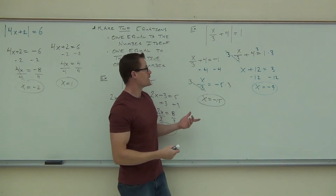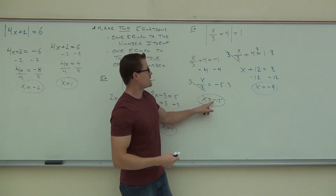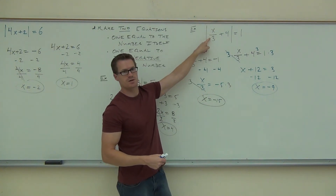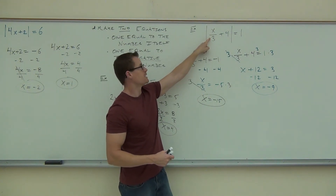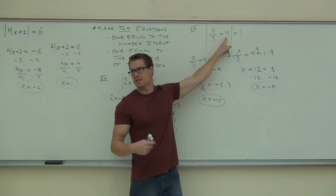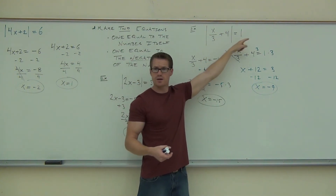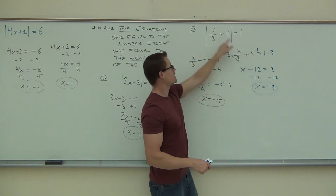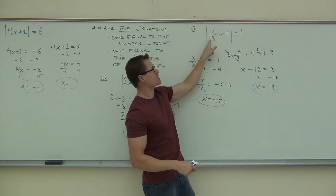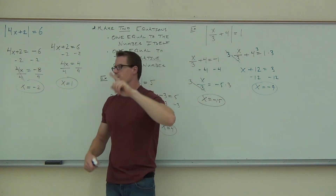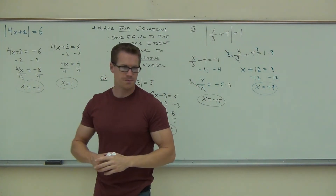You should check it. If we plug in negative 15: negative 15 divided by 3 is negative 5, plus 4 gives us negative 1, absolute value of negative 1 is 1. That works. If we do negative 9: negative 9 divided by 3 is negative 3, plus 4 is 1, absolute value of 1 is 1. That also works.